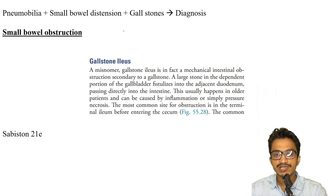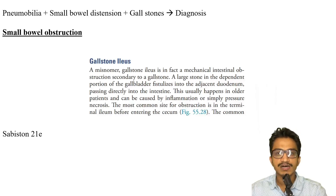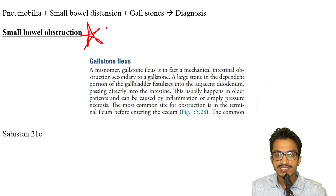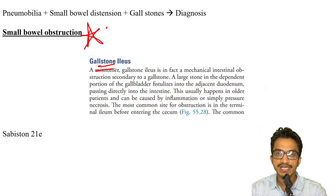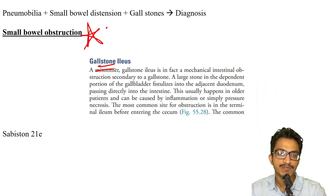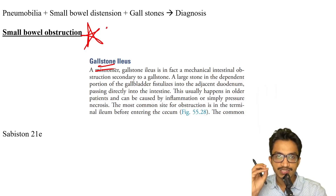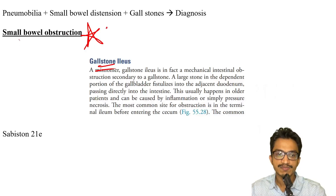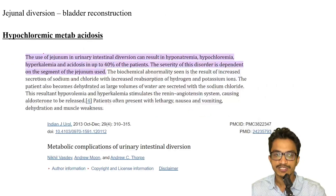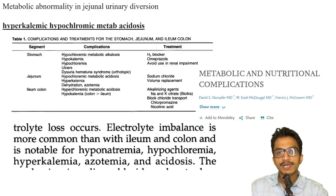If a patient presents with no mobilization, distension, and gallstones, it is because a stone has passed and caused obstruction in the small bowel — this is gallstone ileus. The best answer should be small bowel obstruction, as the stone has passed and led to distension of the small bowel.